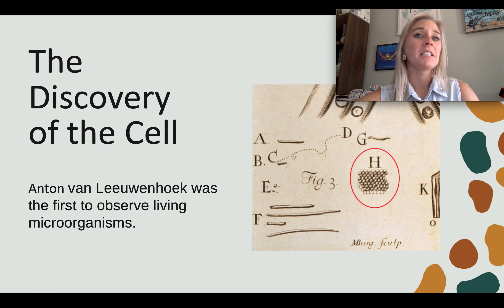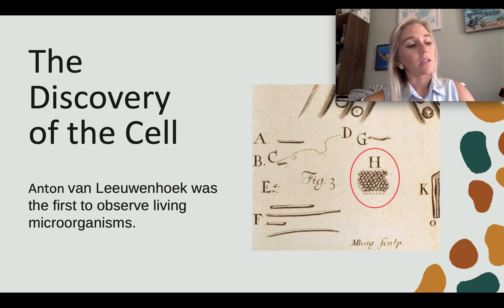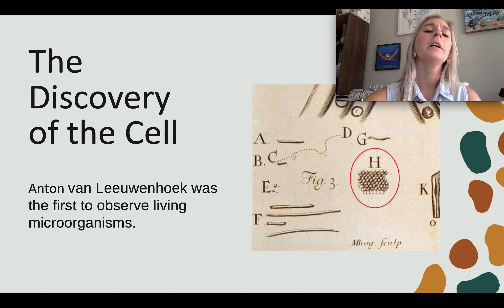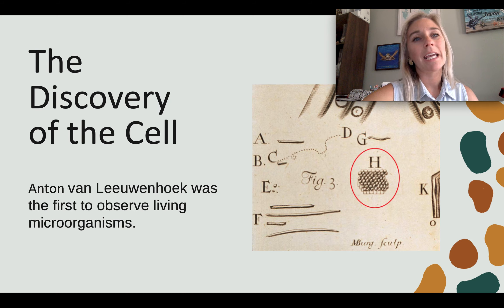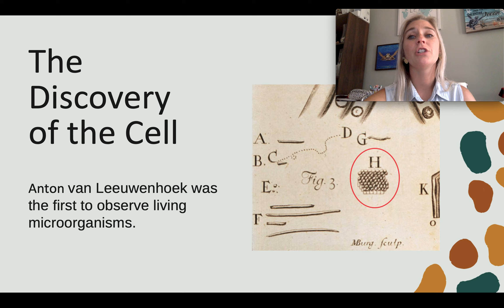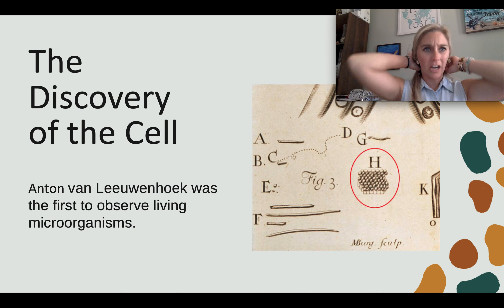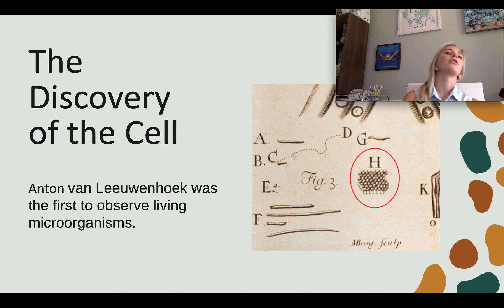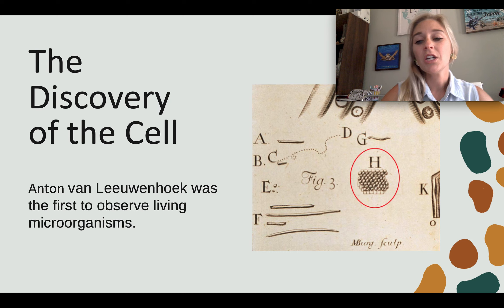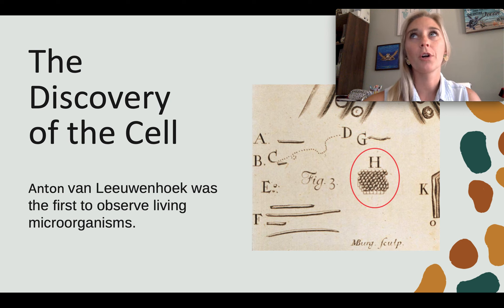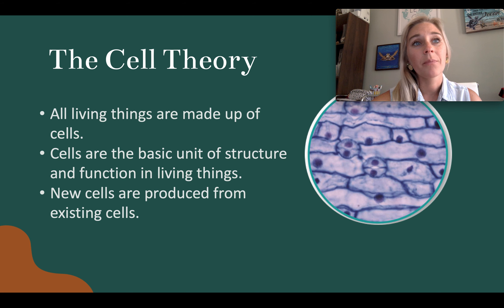By the 1800s, scientists had discovered that all living things are made of cells. In 1838, German botanist Matthias Schleiden concluded that all plants are made of cells. The following year, German biologist Theodor Schwann stated that all animals are made of cells. In 1855, Rudolf Virchow concluded that new cells can only be produced from the division of existing cells. They all built on each other's ideas to develop the cell theory.